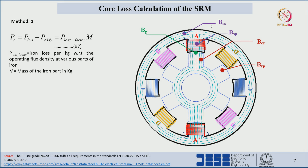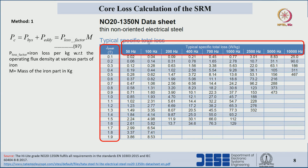For example, when calculating core loss with respect to the stator back iron, we identify the operating flux density there. Similarly, the flux density at the stator pole. Based on these flux density values — say 0.8 tesla — we can find the losses per kg at different frequencies. The frequency here represents the time required for the rotor to move from one position to the next; from that time we calculate the frequency.